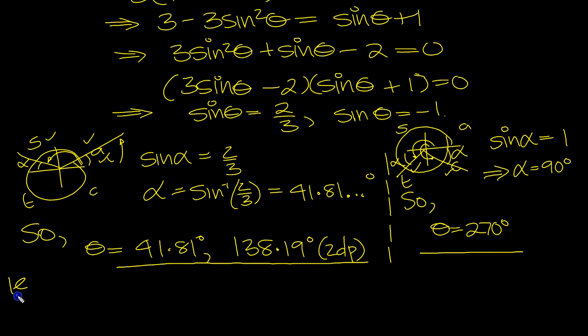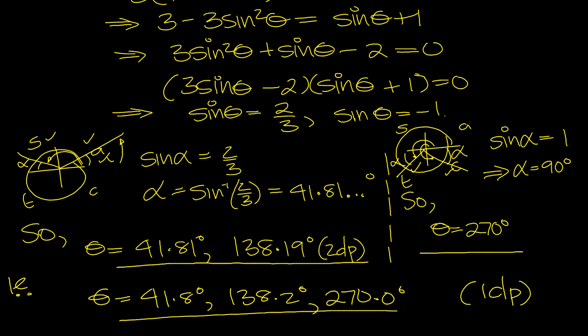So just summarizing it, θ = 41.8°, 138.2°, and 270.0°. And that would be to one decimal place. That was our final answer for all three solutions. Thank you.